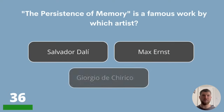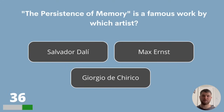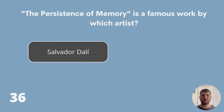Question 36. The Persistence of Memory is a famous work by which artist? Salvador Dali, Max Ernst or Giorgio de Chirico? The answer is Salvador Dali.